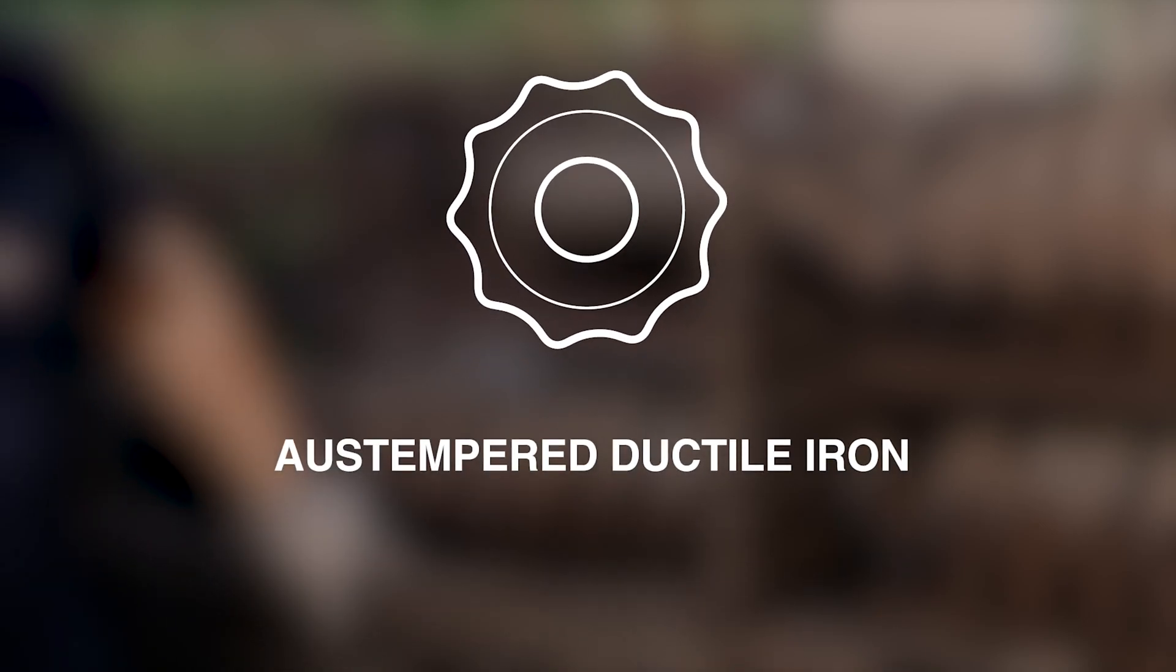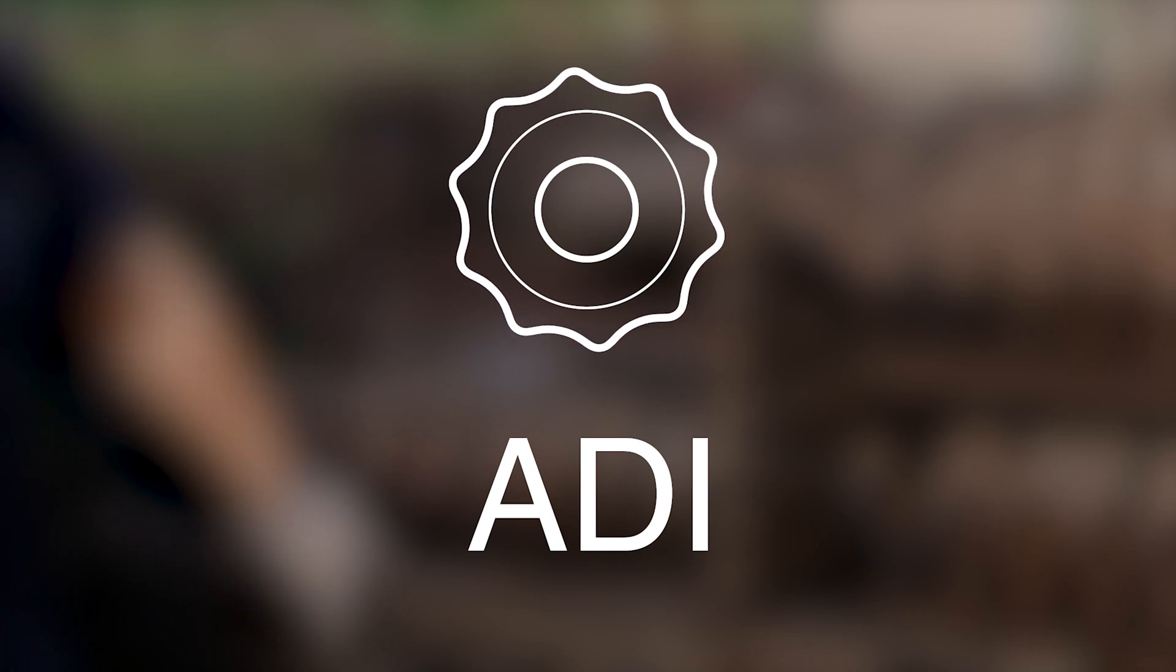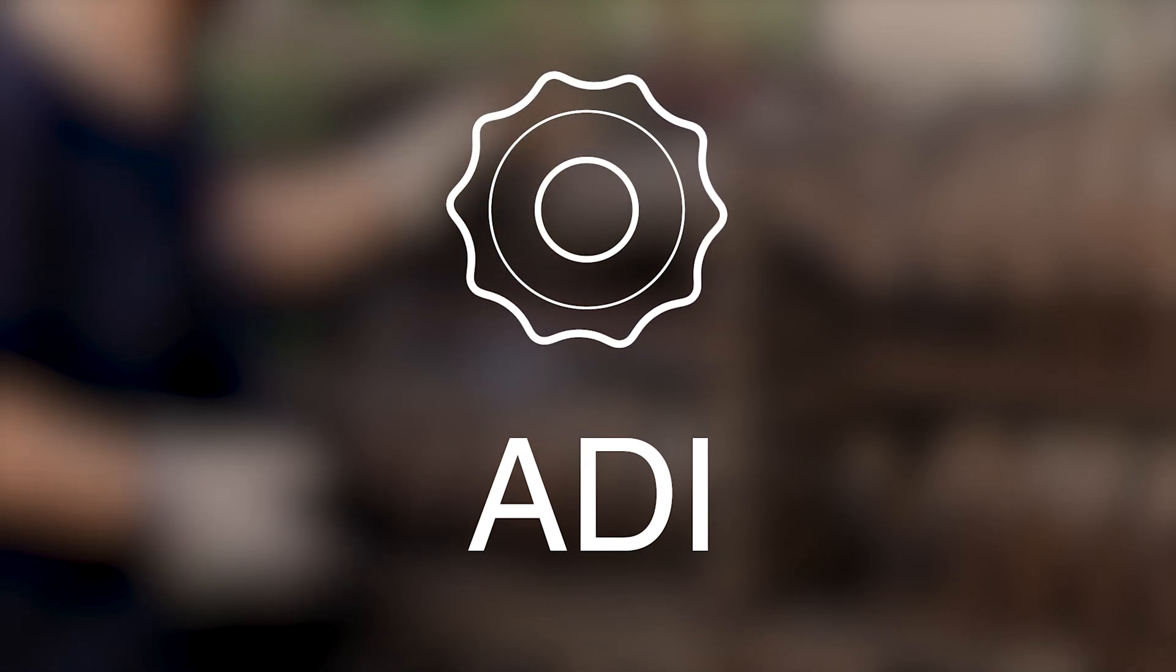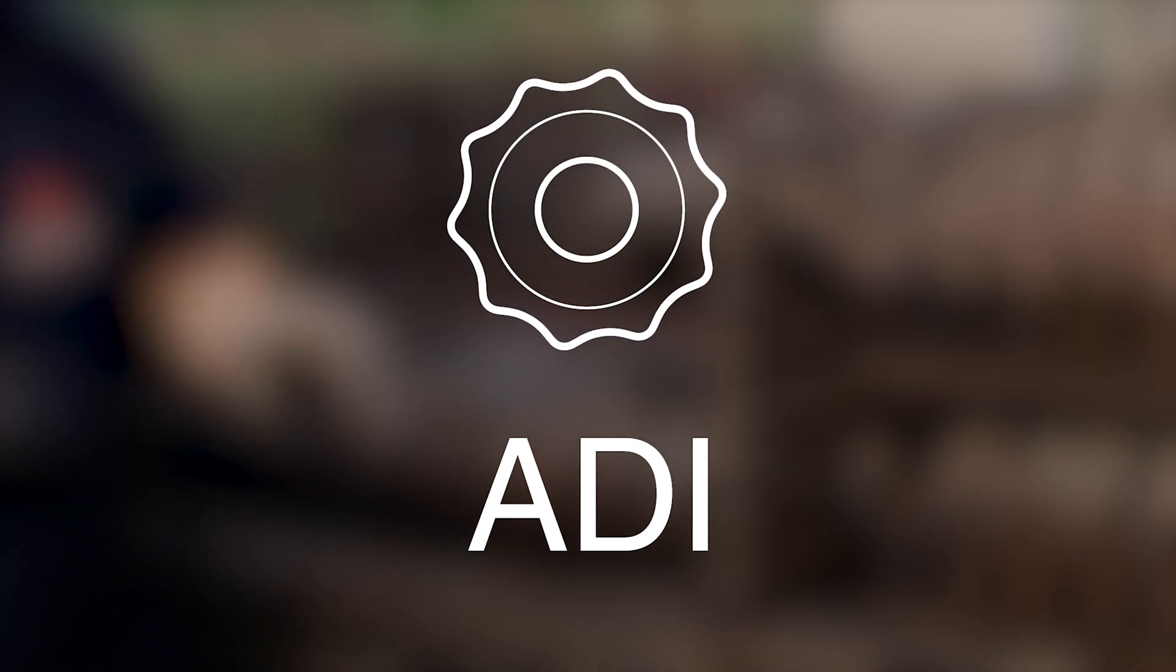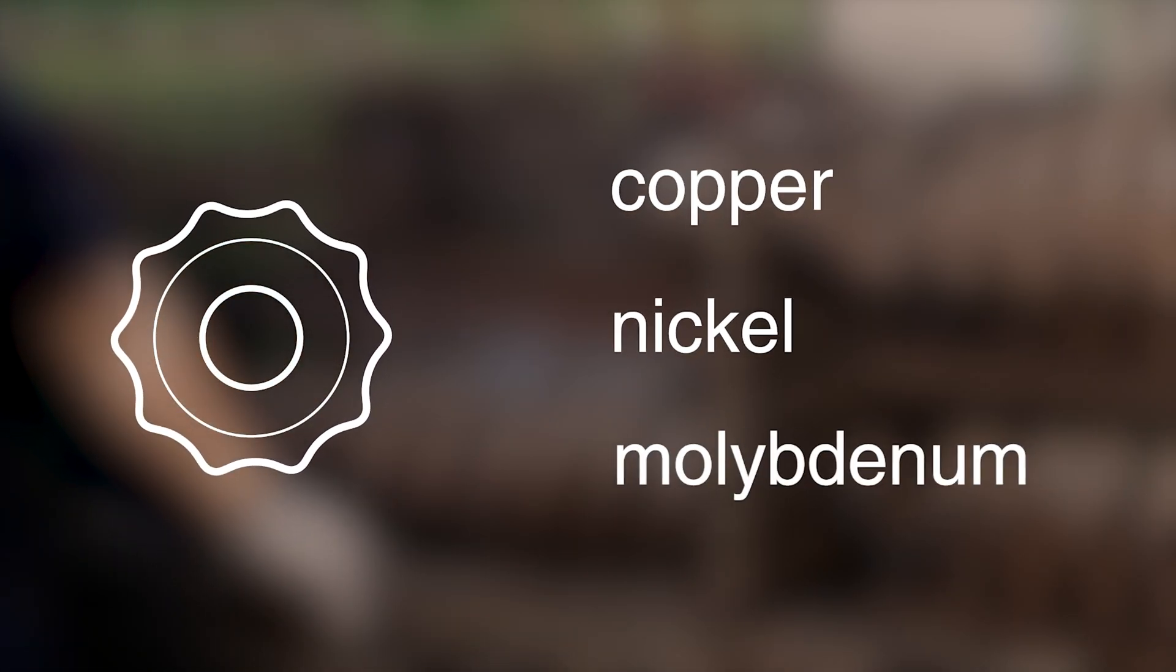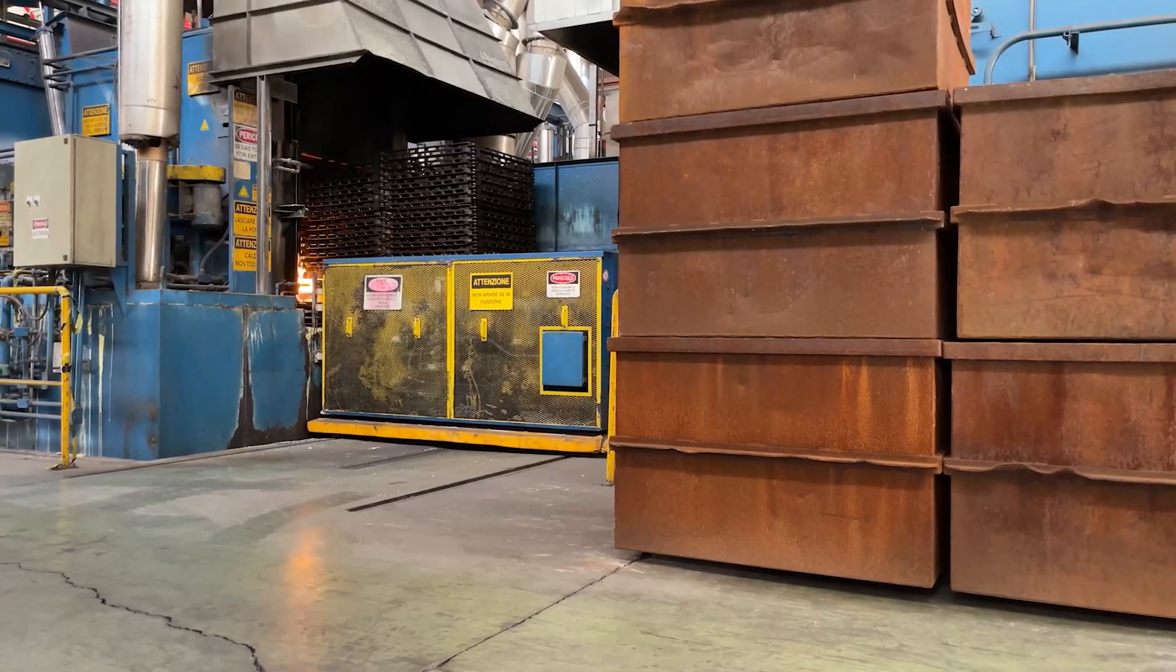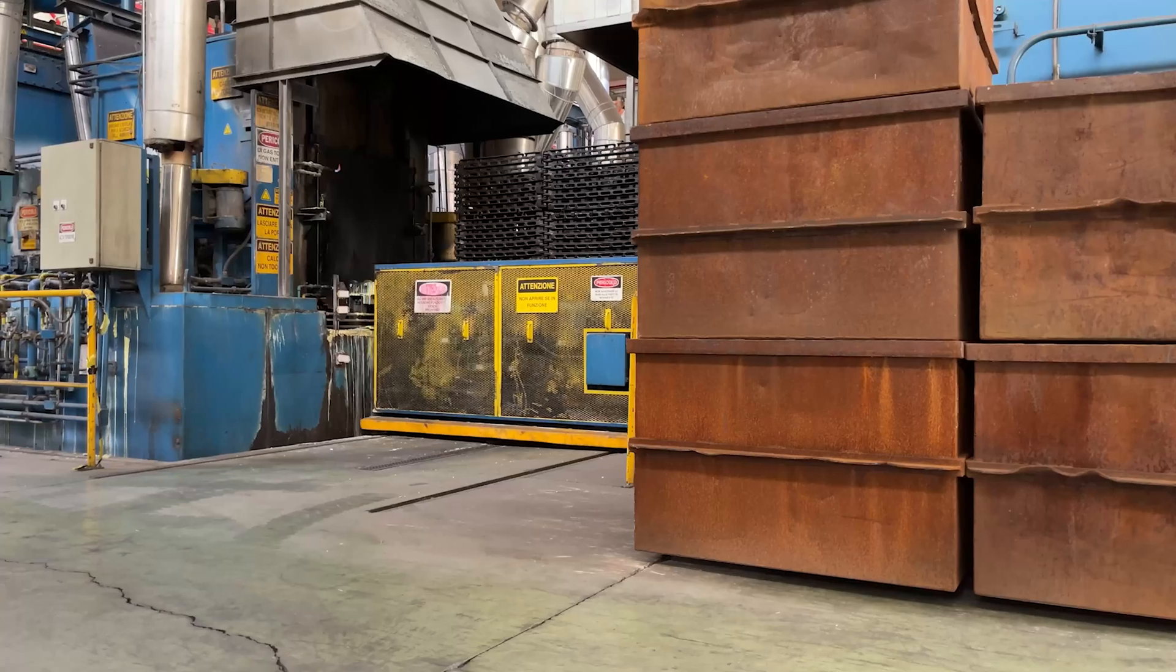The material obtained after the heat treatment is called austempering ductile iron, also known as ADI. To obtain a casting in ADI, it is necessary to treat the spheroidal graphite iron casting suitably enriched by alloying elements such as copper, nickel, and molybdenum. Let us now see how the austempering cycle takes place.